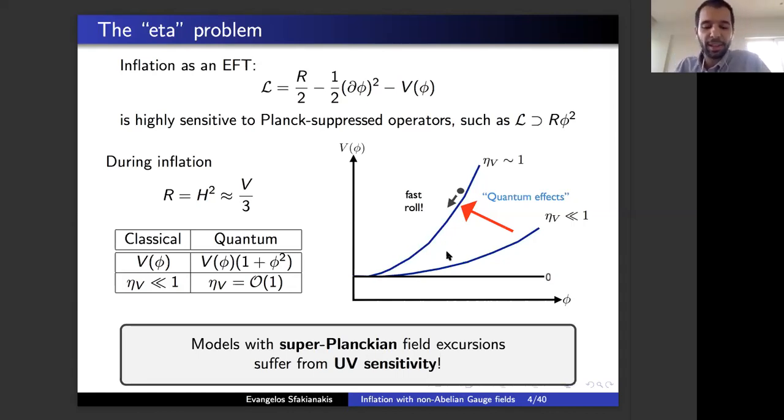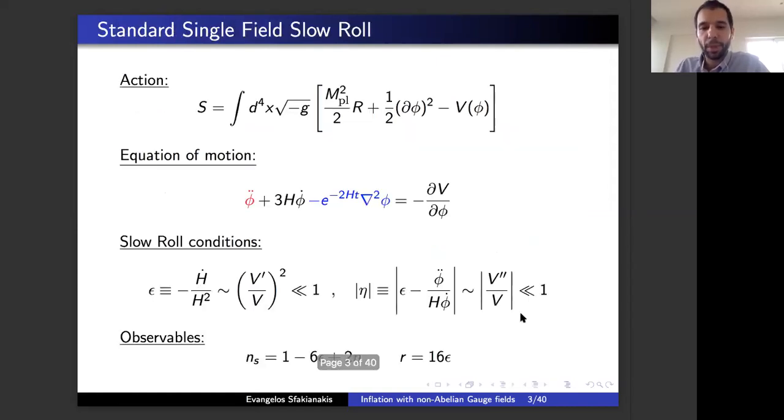This is called the eta problem. Super-Planckian field excursions will cause UV sensitivity problems in the inflaton potential. In the last years, this is related to the Swampland conjectures, which again restrict very severely the potential we can write down and in essence forbid us from writing down v prime over v much smaller than one.